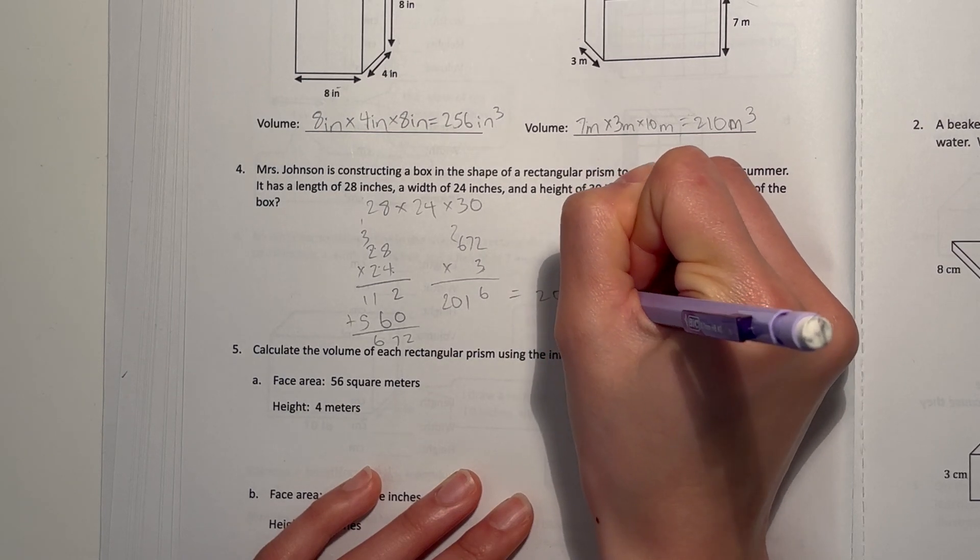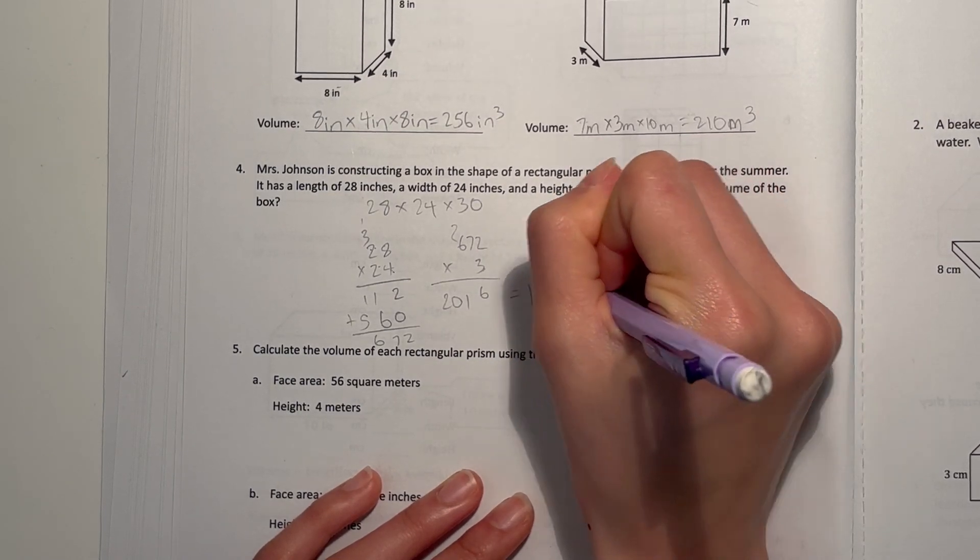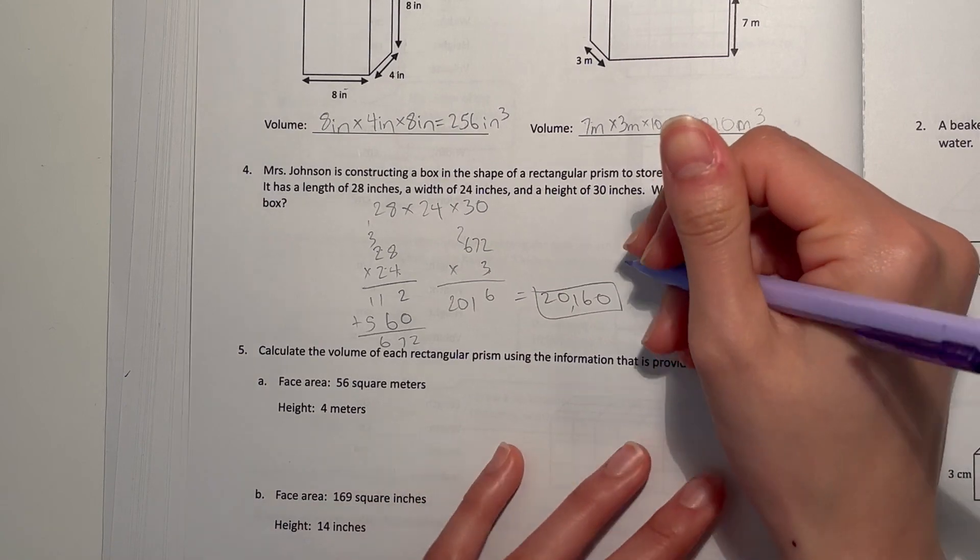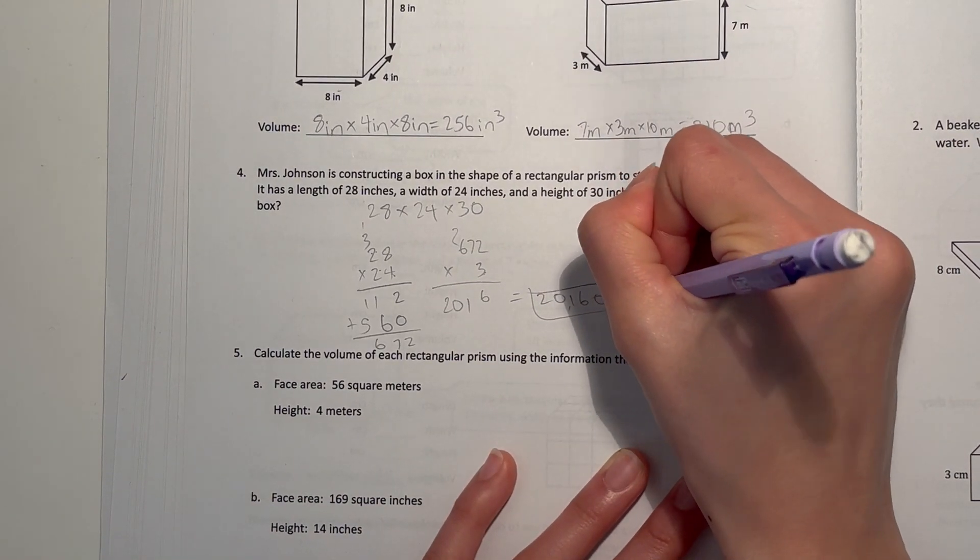And then add a zero at the end because 30. That's 20,160 cubic inches.